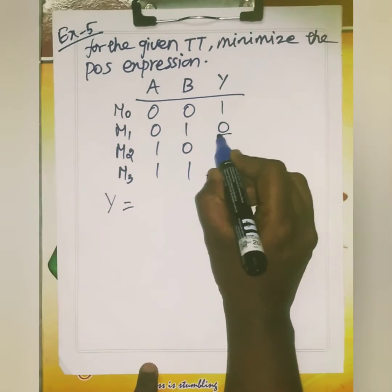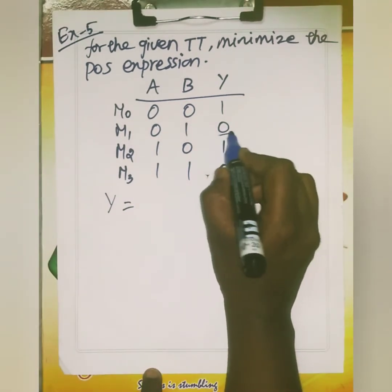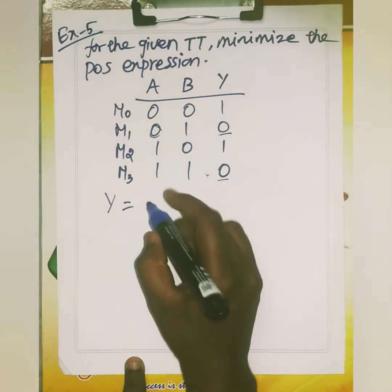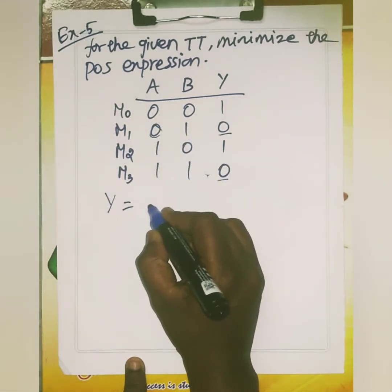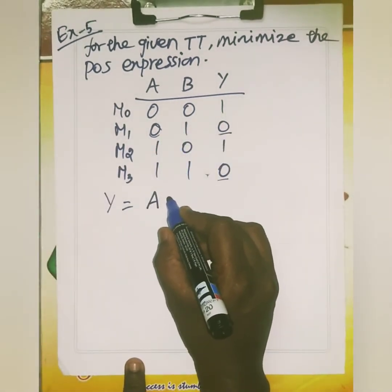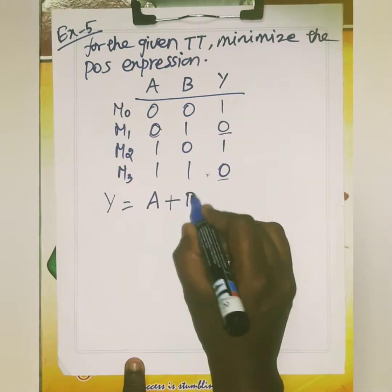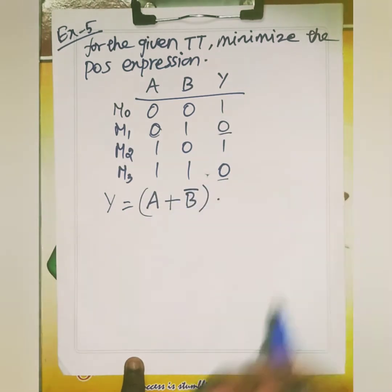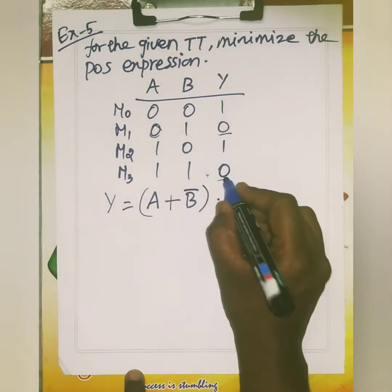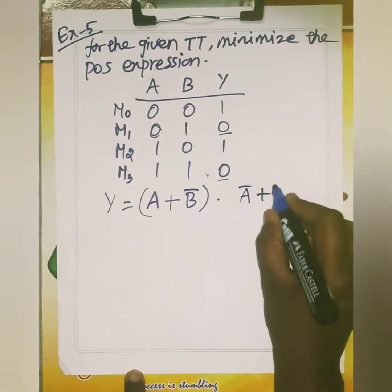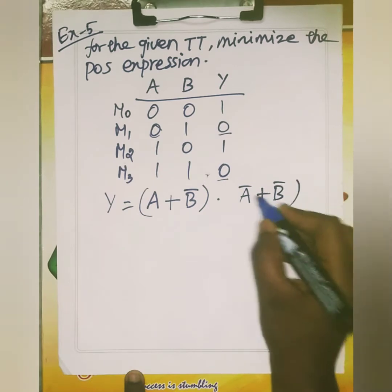You have to write the function where output is 0. For 0, you will be putting A, and for 1 you will be writing complement. So A plus B bar, and then A complement plus B complement.